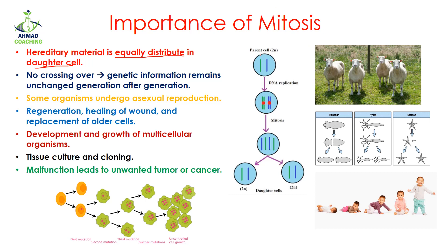Here you can see a parent cell which has two N number of chromosomes. After the process of DNA replication, this chromosome number is doubled. In the next generation, which is the daughter cells, they are separated from each other and each cell receives its number. So we can see that daughter cells have the same number of chromosomes as the parent cells.